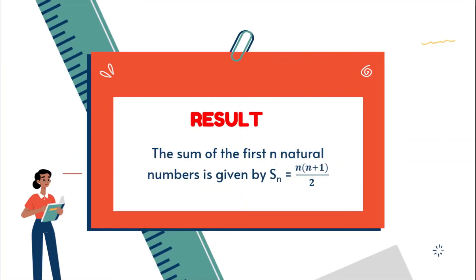So the result of this activity is that we can find the sum of the first n natural numbers using the relationship S_n equal to n(n plus 1) upon 2, where n stands for natural numbers.